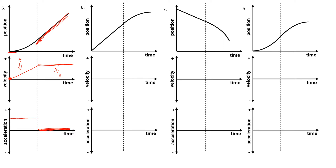To describe this motion, you would say you start at position zero and begin to speed up to the right, increasing your speed in the positive direction, then move with a constant speed to the right.